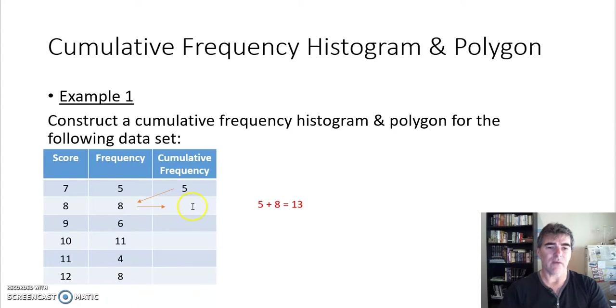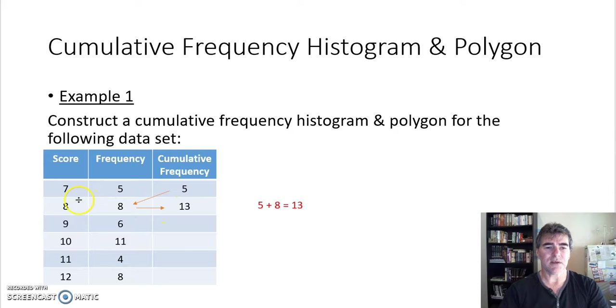That will tell me that I will have five plus eight, 13 scores altogether. So over here, my five plus eight, I've now got 13 as my cumulative frequency. So that means the first 13 scores are seven or eight. The first five scores, so now if I continue that process to work out my next value in the cumulative frequency...